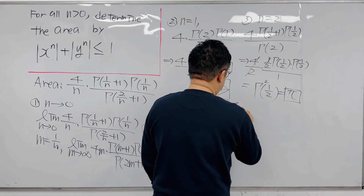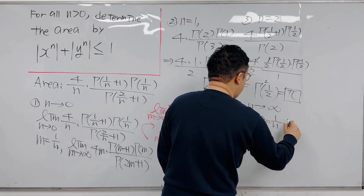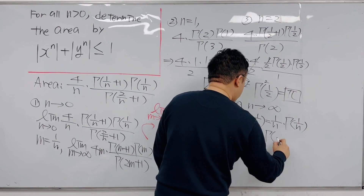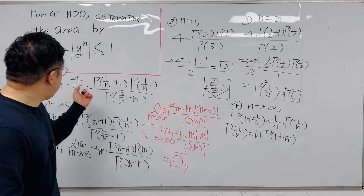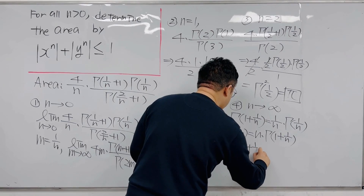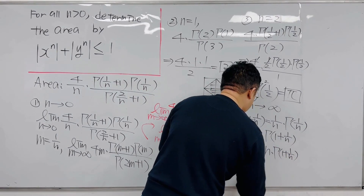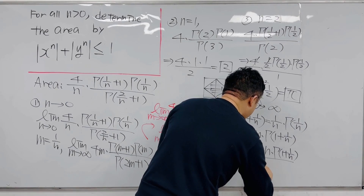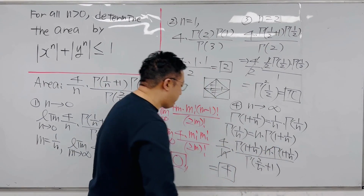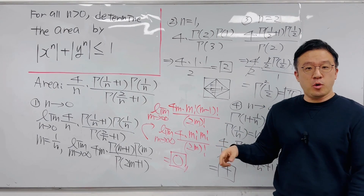Case 4: when n → ∞. Using the identity Γ(1 + 1/n) = (1/n) × Γ(1/n), so Γ(1/n) = n × Γ(1 + 1/n). Substituting into the area formula, the n's cancel out, and we're left with just 4. So as n → ∞ the region becomes a square with area 4. Pretty interesting question about the beta function — I'll be back with more videos like this soon.